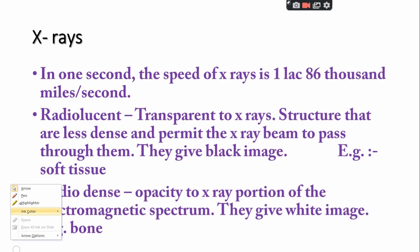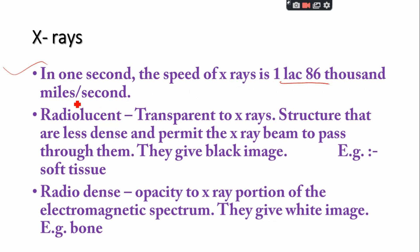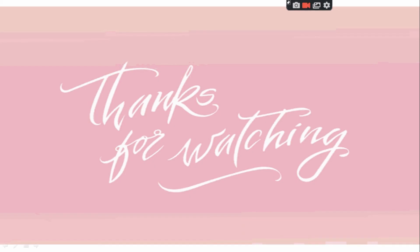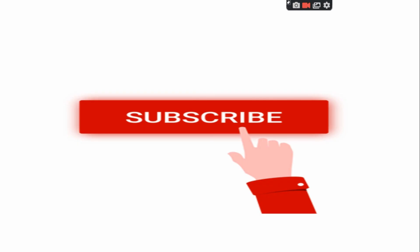The speed of x-rays is 186,000 miles per second. Radiolucent structures are transparent to x-rays — they are less dense and permit the x-ray beam to pass through, giving a black image; for example, soft tissues. Radiodense structures are opaque to x-rays and give a white image; for example, bone. This is all about x-rays and how to conduct radiography. Thank you for watching — if you are new, please subscribe to the channel.